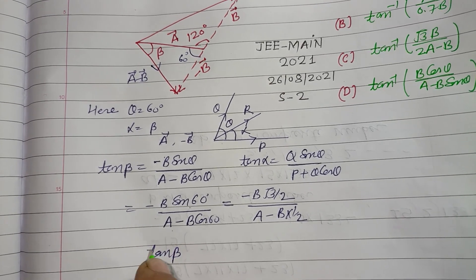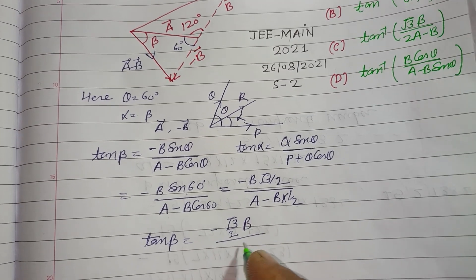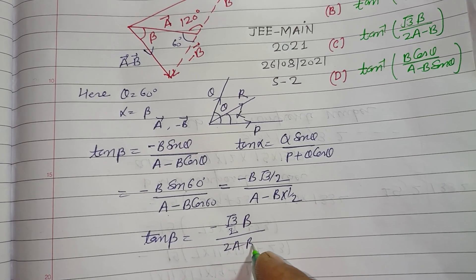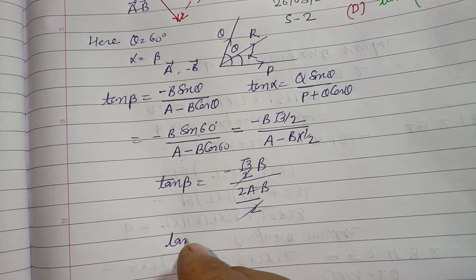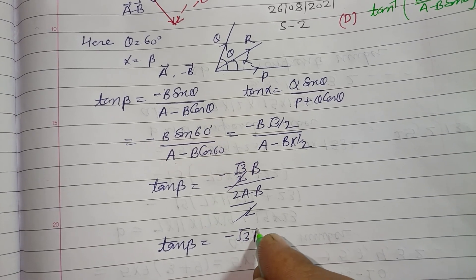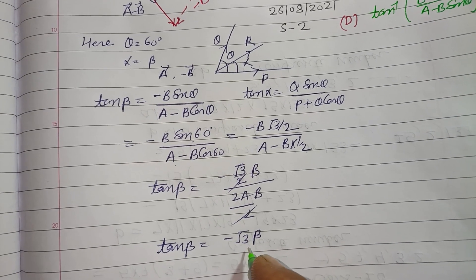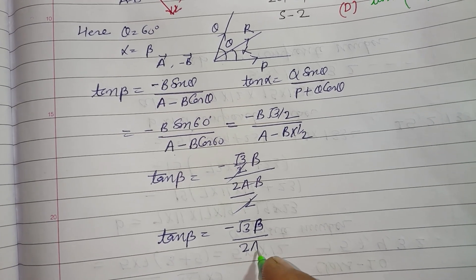So tan beta equal to B, so tan beta equal to root 3 by 2 B upon 2A minus B, so tan beta equal to root 3 by 2 B upon 2A minus B.